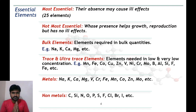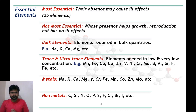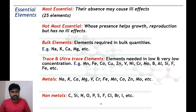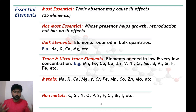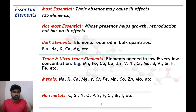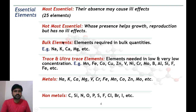The next category is metals. We know that in the periodic table there are metals, non-metals, and metalloids, and all types of elements are necessary in the biological process. Among essential elements, metals include sodium, potassium, calcium, magnesium, vanadium, and chromium. There are also essential non-metals such as carbon, silicon, nitrogen, oxygen, and phosphorus. These are the various types of essential elements that we can categorize.